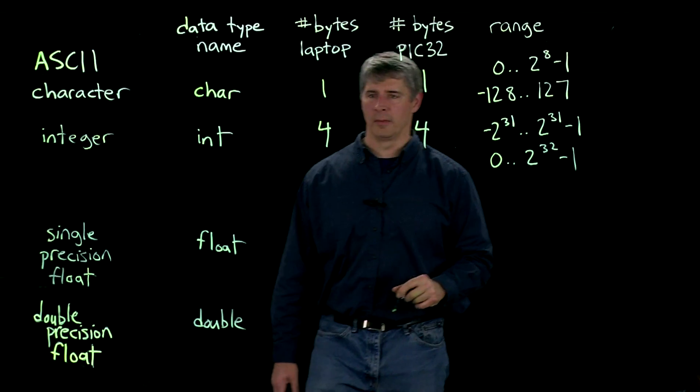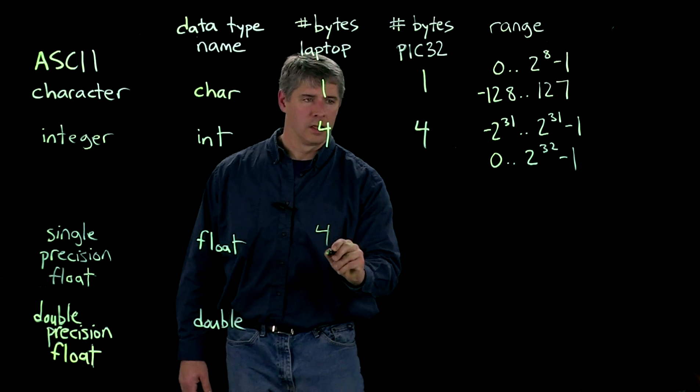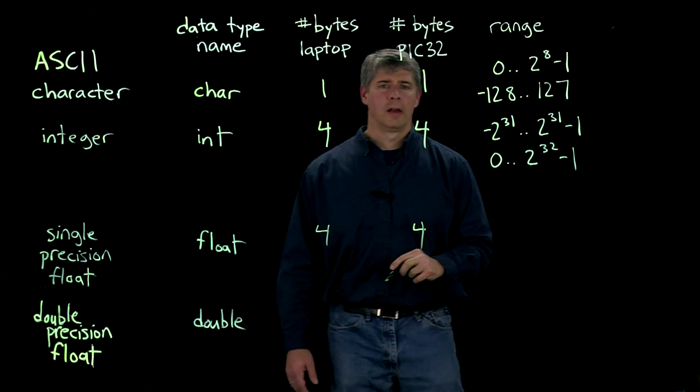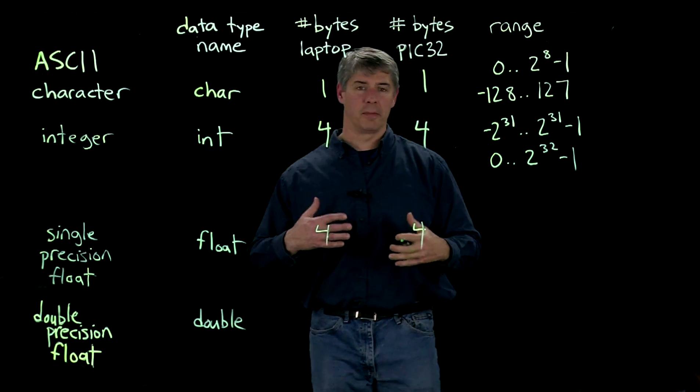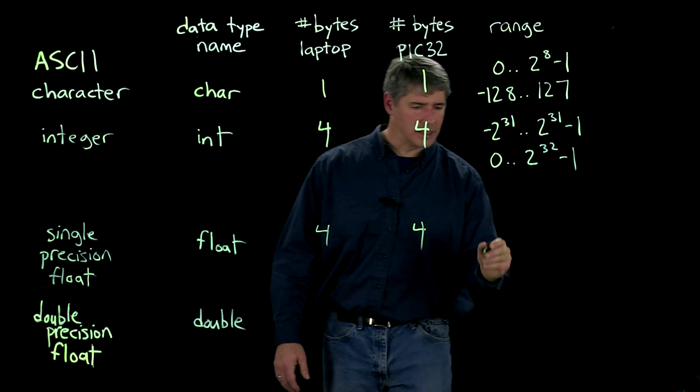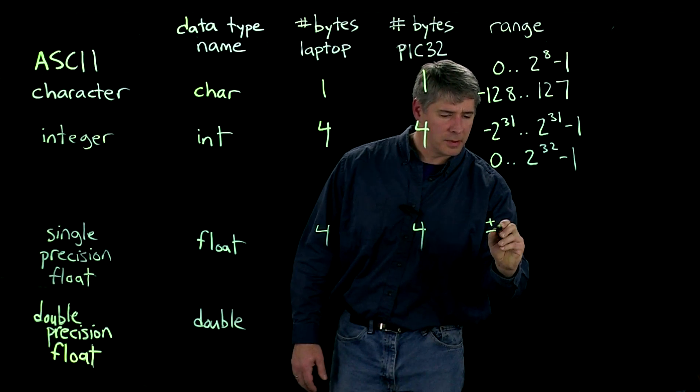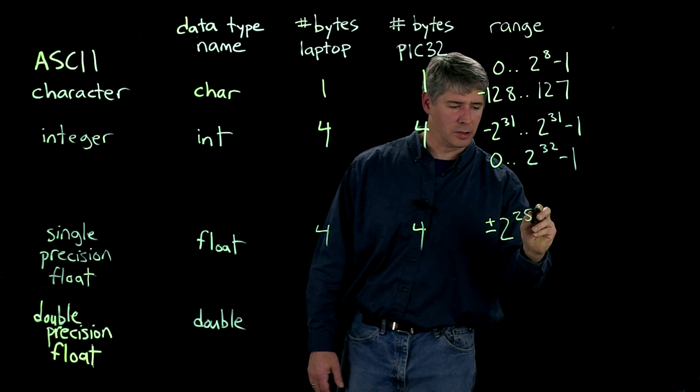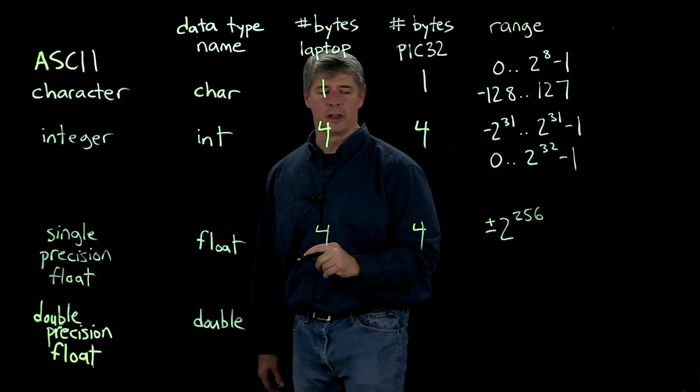Single-precision floating-point numbers also typically use four bytes. But, floating-point numbers can represent a much wider range of values. In fact, it can go up to plus or minus 2 to the 256, or 2 to the 8th. Huge numbers.